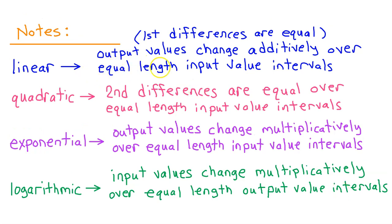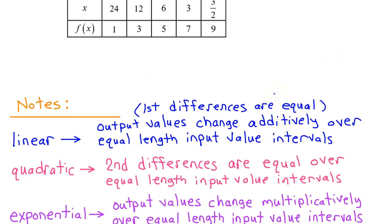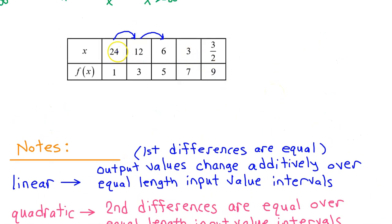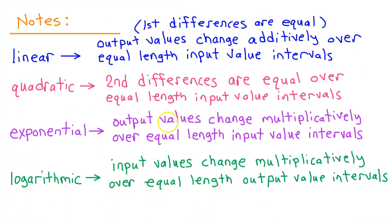Notice how the first three, linear, quadratic, and exponential, require equal length input value intervals. However, when we look back at the chart, we do not have equal length input value intervals. From 24 to 12, that's minus 12. But from 12 to 6, that's negative 6. So our only hope is logarithmic.